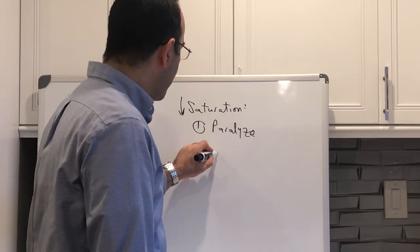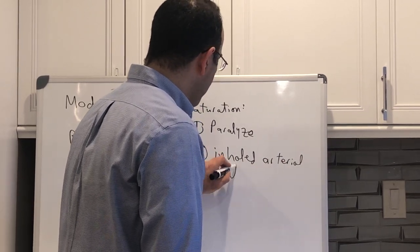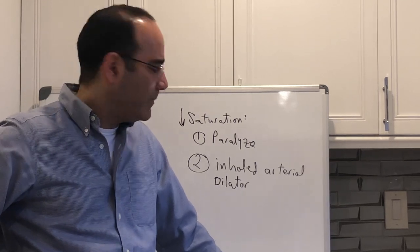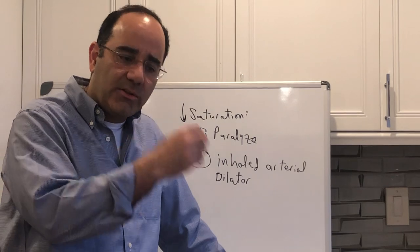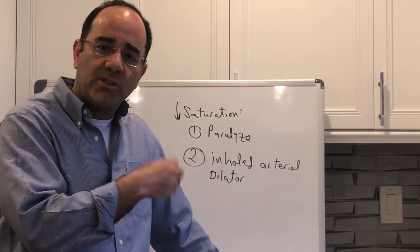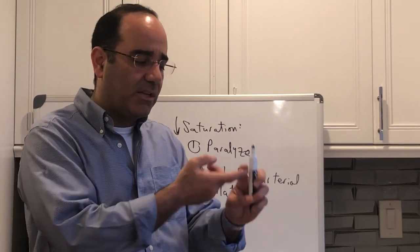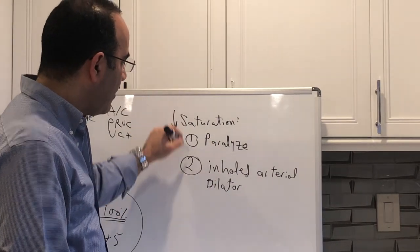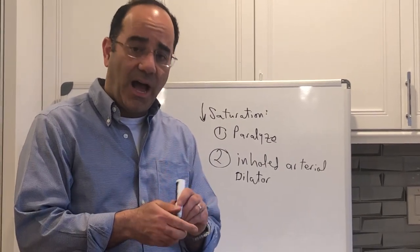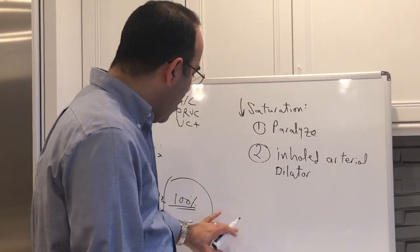The other option, if you happen to have it, is to give the person an inhaled arterial dilator. The two most commonly used ones are inhaled nitric oxide and inhaled prostacyclin, which goes by the trade name Flolan. Each of these goes in through the endotracheal tube and goes to the alveoli that are being aerated. By going to the alveoli that are being aerated, they cross over and preferentially dilate the capillary beds and the arteries in the immediate area of the alveolus. What you're basically doing is reestablishing VQ matching. Two good pharmacologic adjuncts.